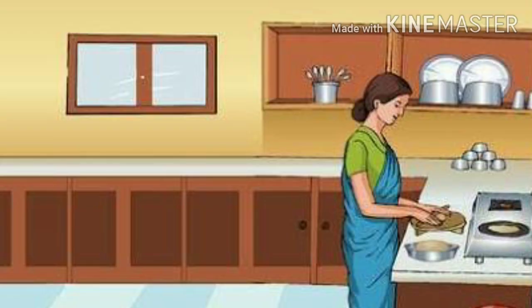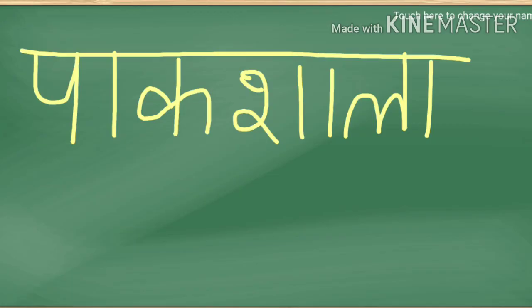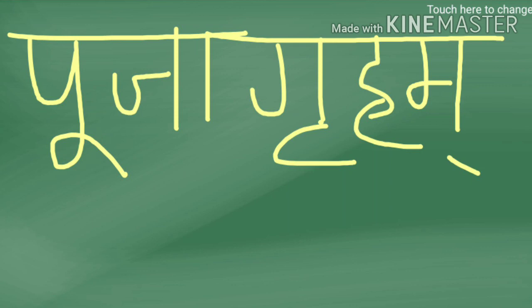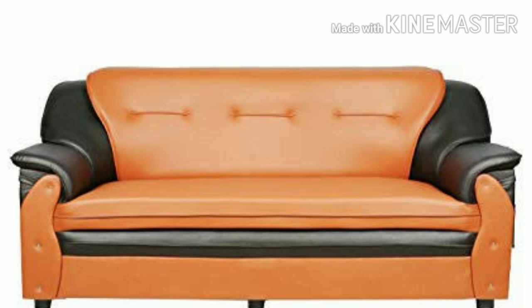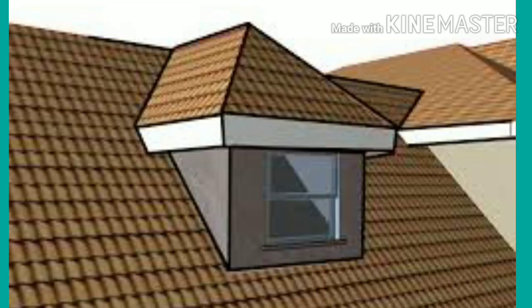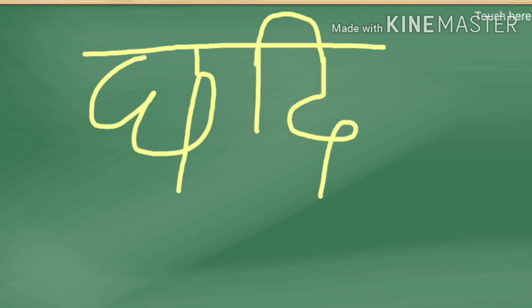And now what are you seeing? Kitchen. Correct. Paakashala. Now we are seeing a puja room. Correct — Pooja Griham. The next picture — this is also a thing which we use in our house for sitting. We are going to learn the name in Samskritam: Sukasanam. The next picture is a roof — roof of a house. Chadi.